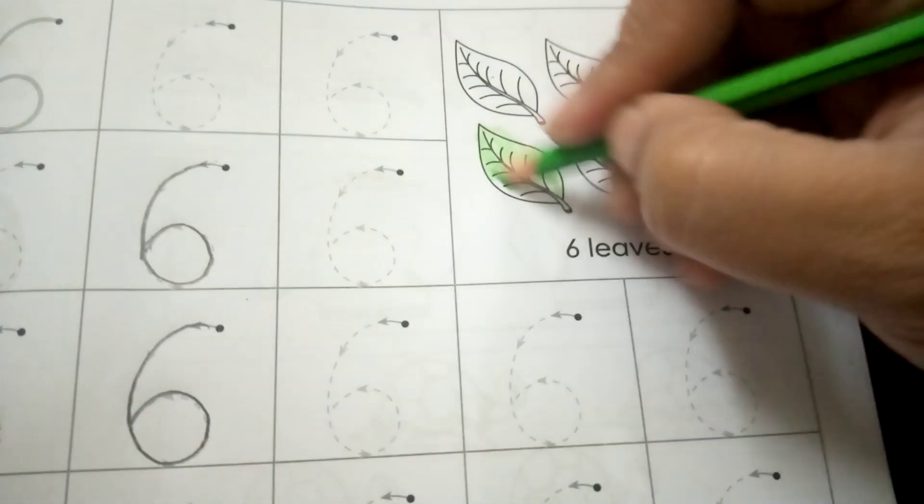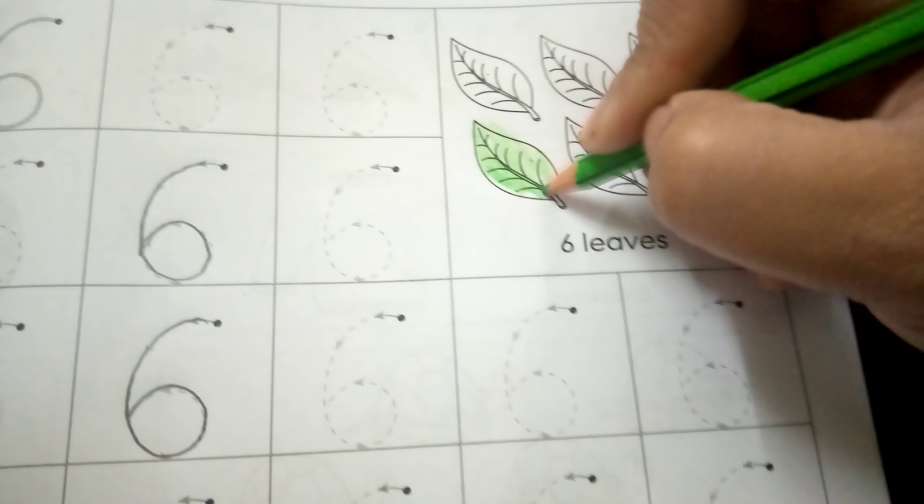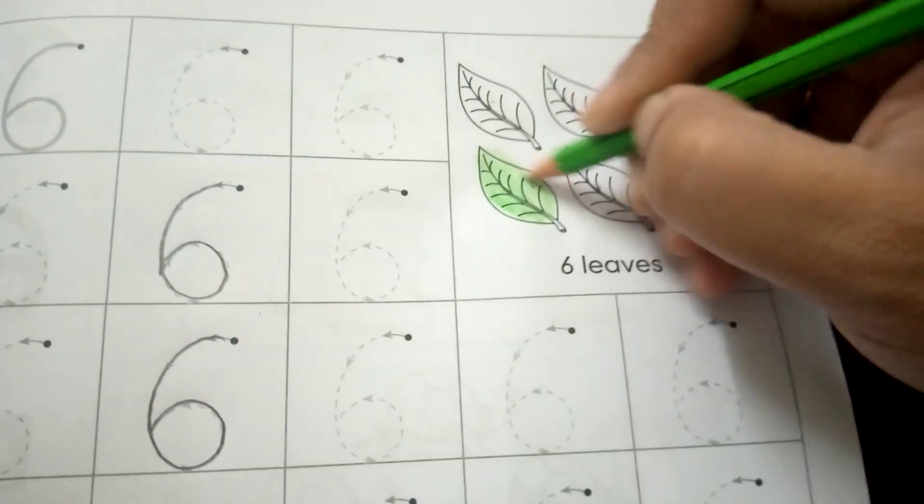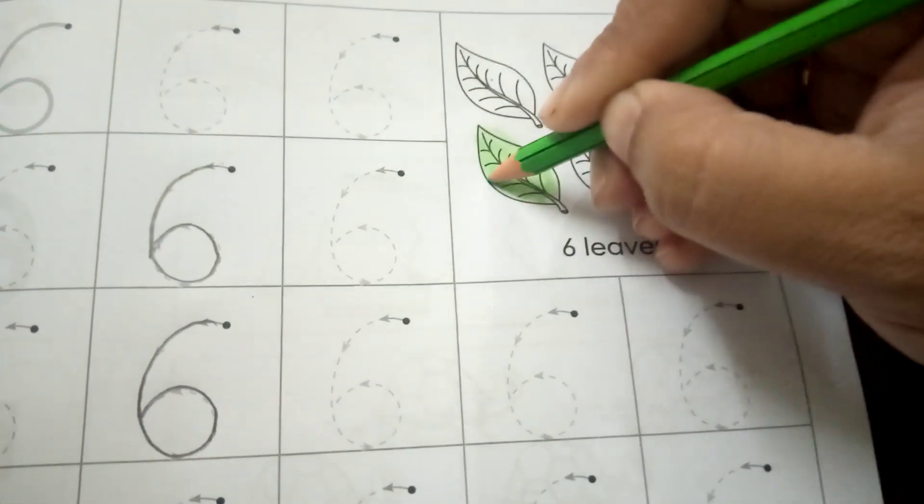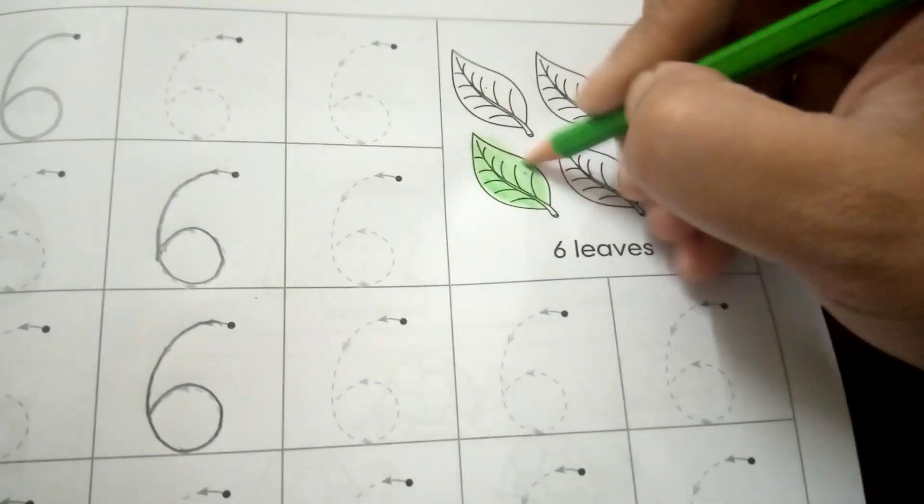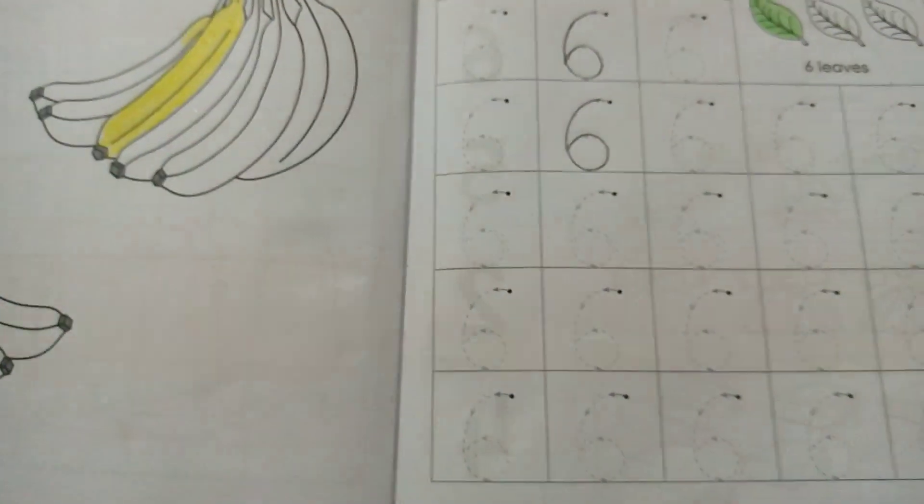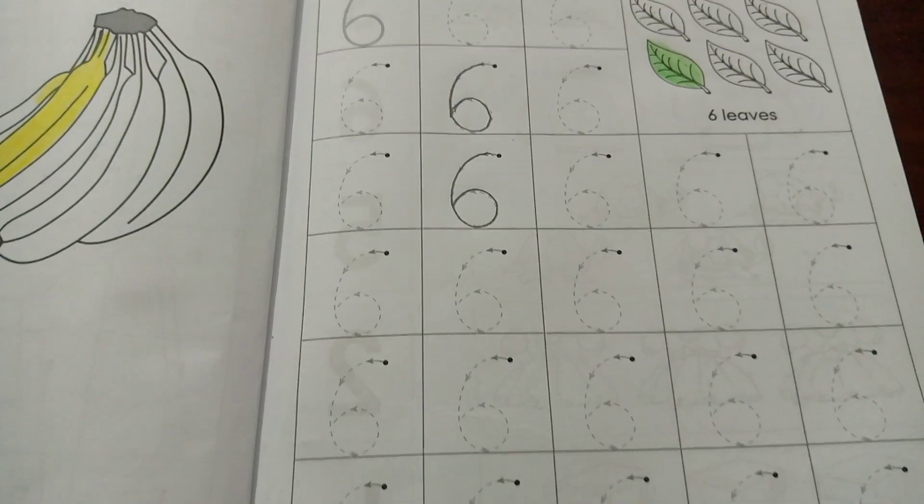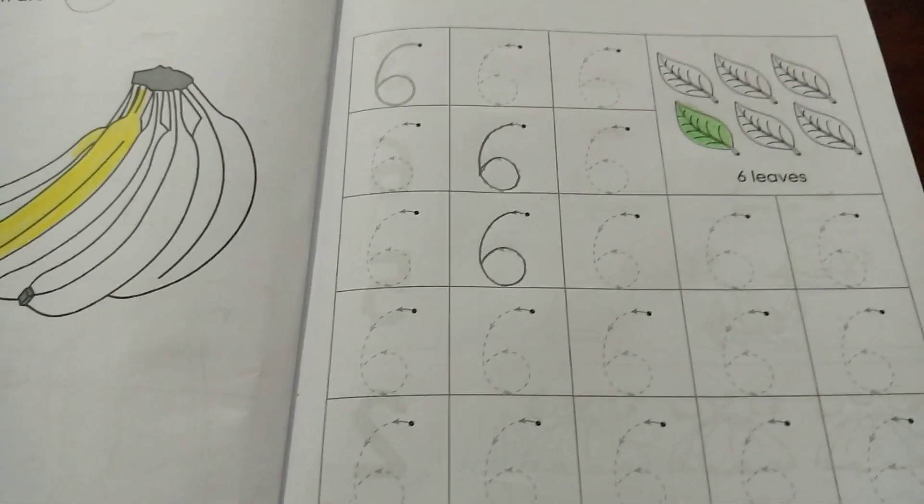What you will do is first of all you will trace number six, then you will learn it and color these leaves. Try to do neat color. So you have to do these two pages - page number ten and page number eleven of your student workbook. Thank you so much.